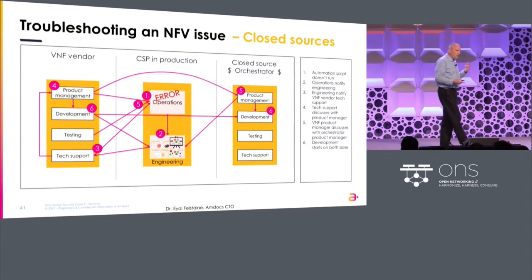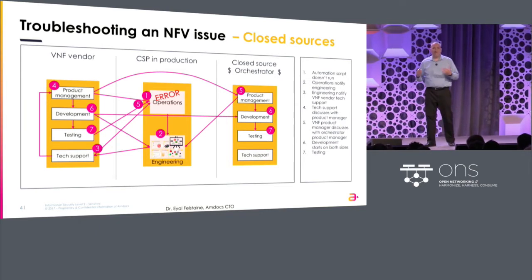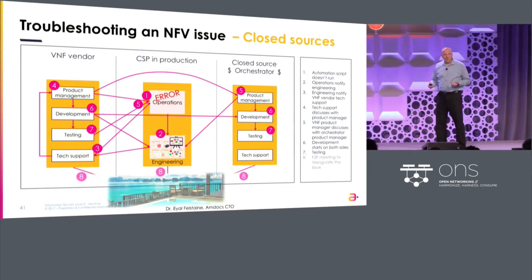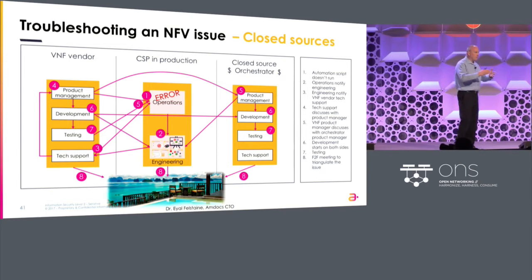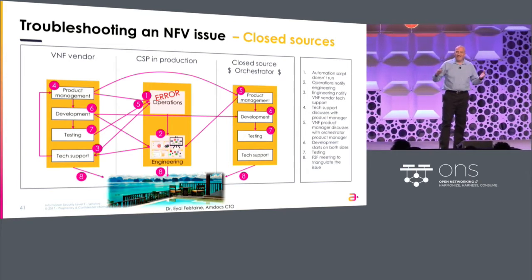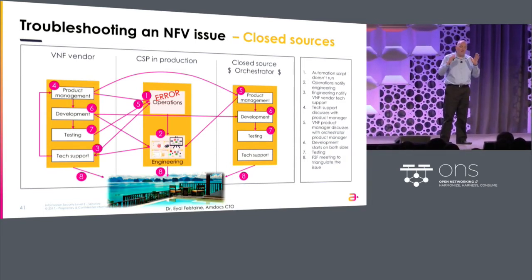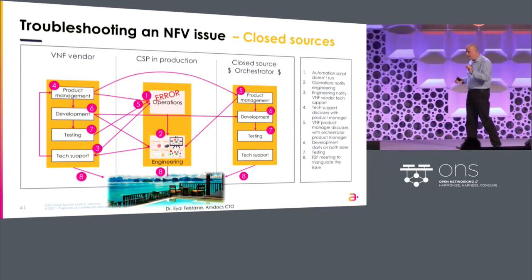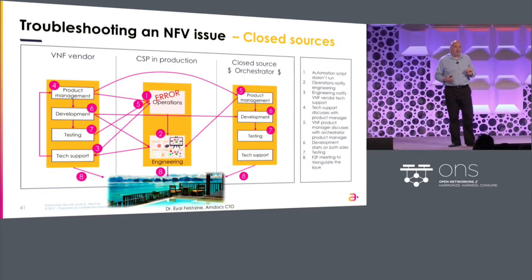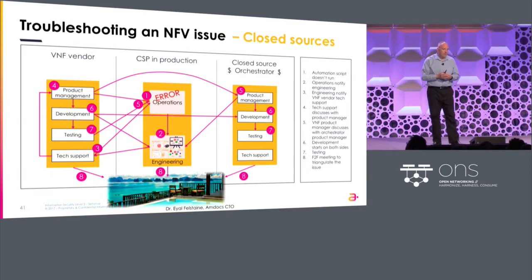Then it goes to R&D, it goes to testing, and usually at this point you can no longer do it with phone calls — you need face-to-face. In the cases I was involved in, it always ended up with all the engineers going to some exotic place for an off-site, and they resolve it. What you see on this slide — this spaghetti — is the anti-material of OPEX reduction and agility. This is something that is impacting the value of NFV, and that's just one box out of the 15 boxes I showed you.